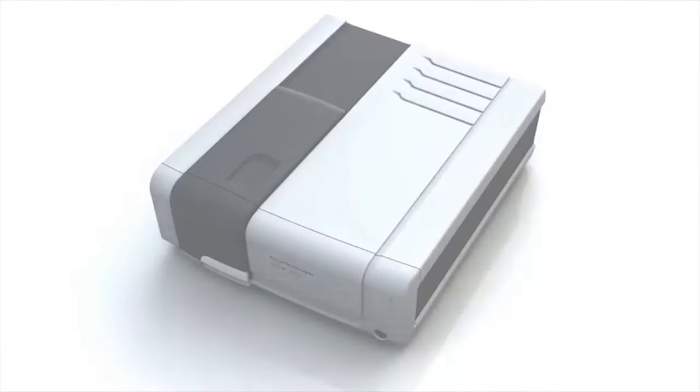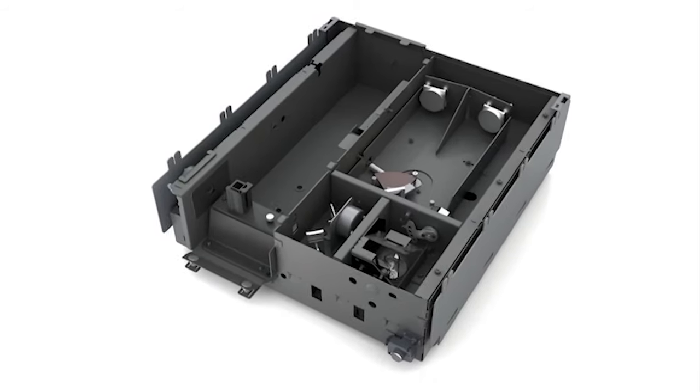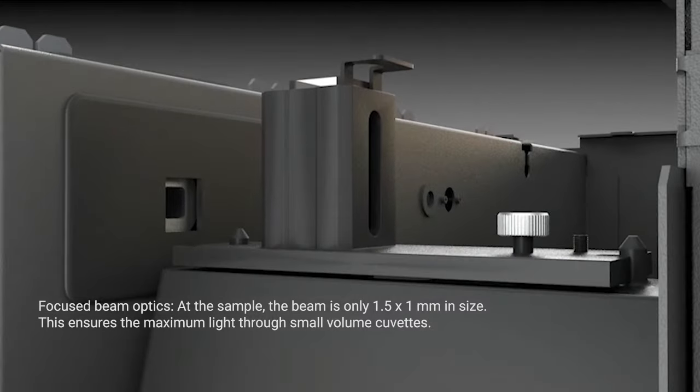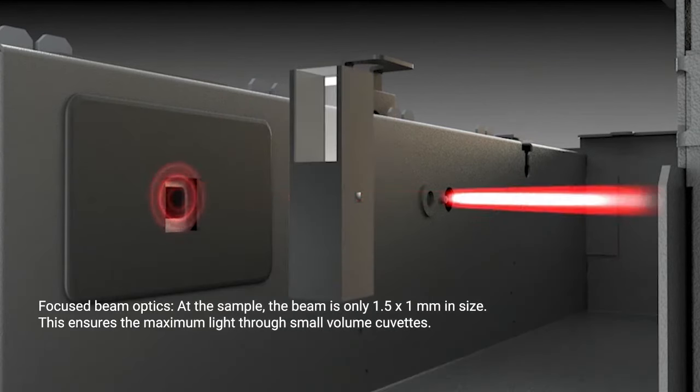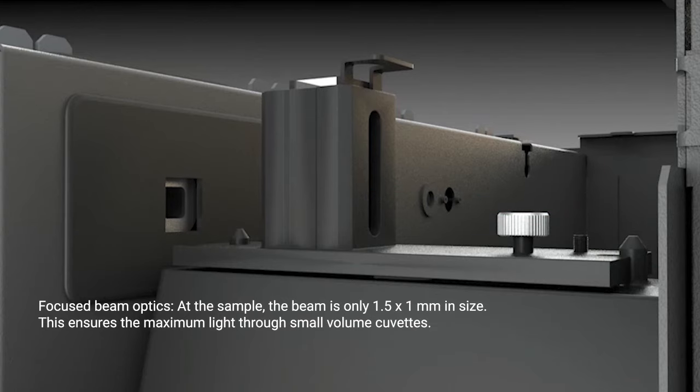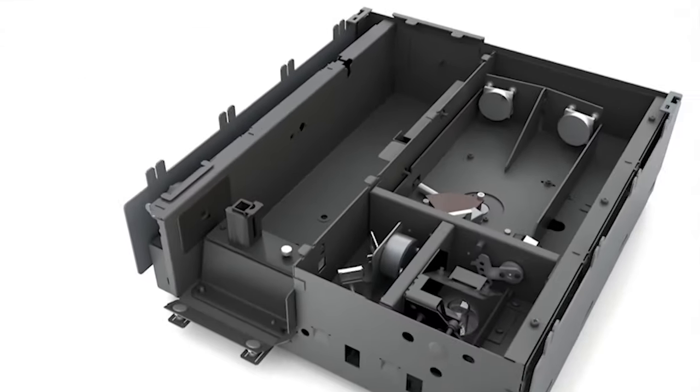The design feature of the Cary 60 that allows us to get this energy throughput is from a feature called focus beam optics. What we do is that we focus our beam down to be 1.5 millimeters by 1 millimeter, so all the energy from the instrument is focused down into that point. And that's why we can get through these small volume cells and maintain our signal-to-noise.